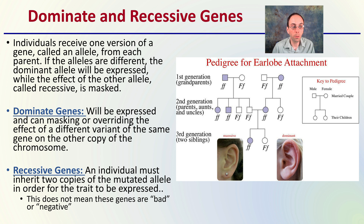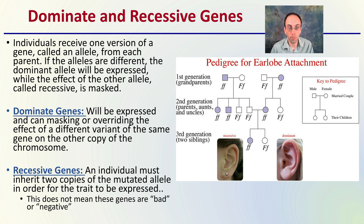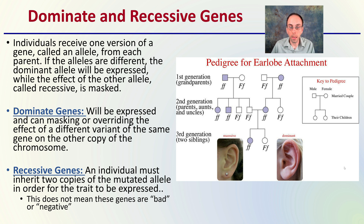For recessive genes, an individual must inherit two copies of the mutated allele in order to express that trait. Keep in mind this does not mean that recessive genes are bad or negative — some are, but not necessarily all of them. Sometimes recessive and dominant genes have really no major effect, as we can see in the example of an attached earlobe versus a distinctive earlobe — an example of a recessive trait and a dominant trait. This is an example of a phenotype, or what it would physically look like, compared to the genotype, the genetics, and we can trace that through different lineages.